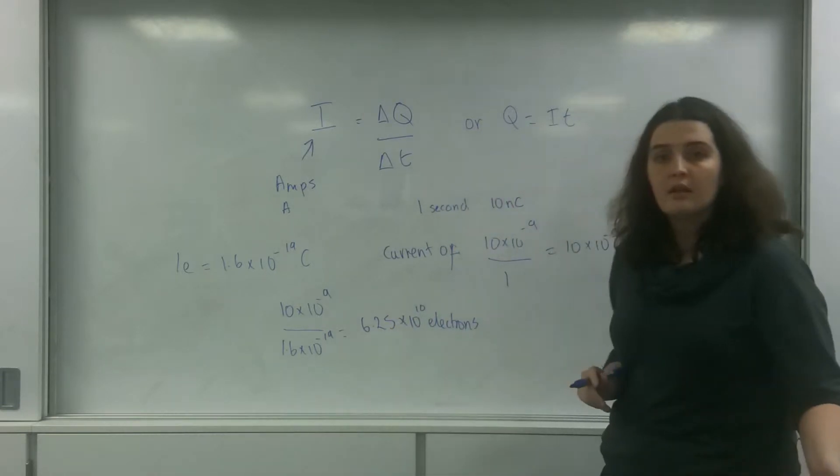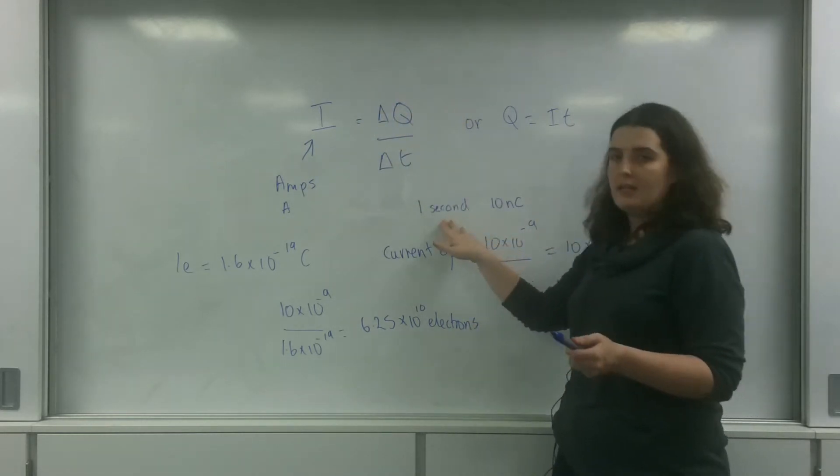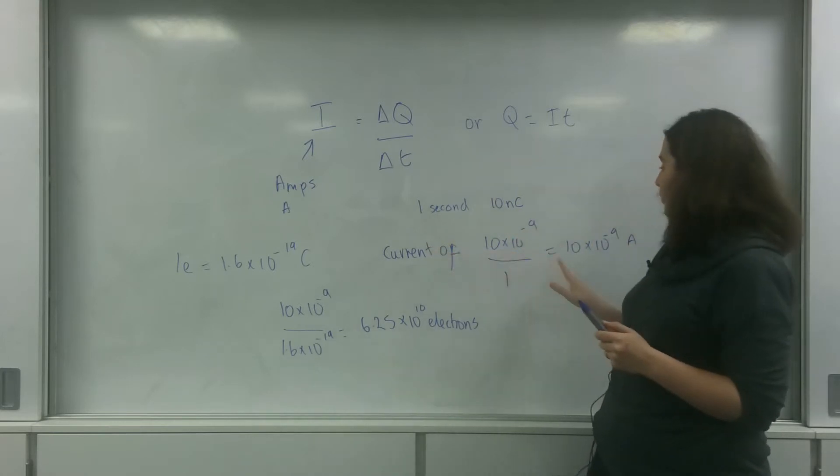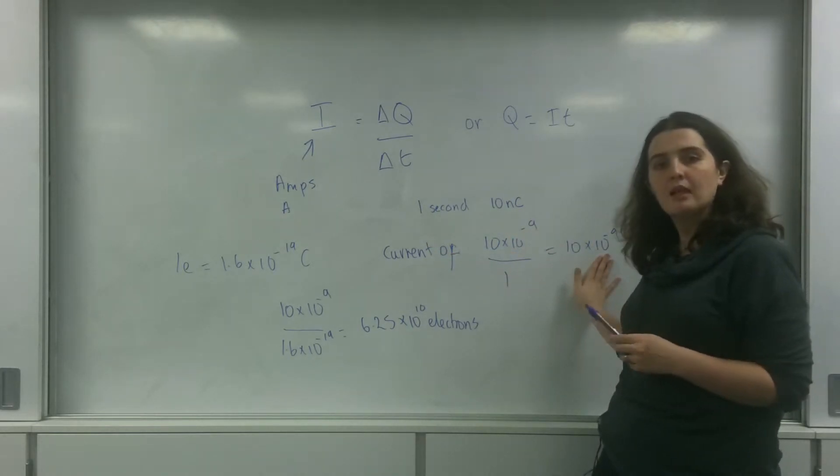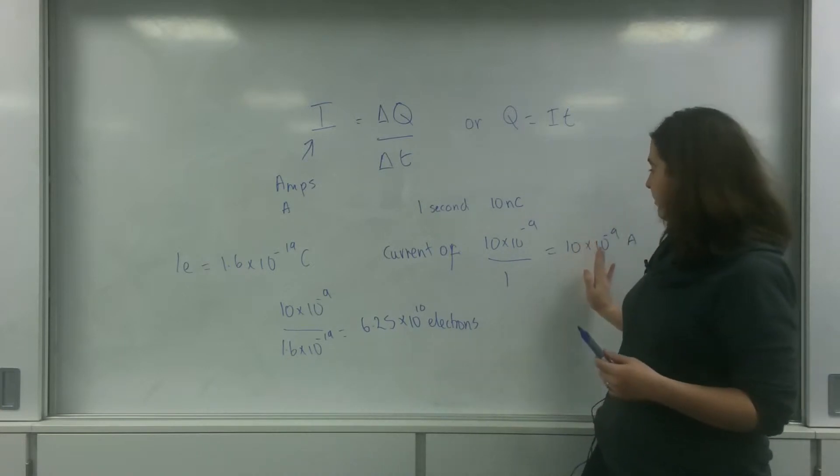So current is the rate of flow of charge. If in one second I have 10 nanocoulombs passing, I would have a current of 10 nanoamps. To work out how many electrons that would be, I took that number.